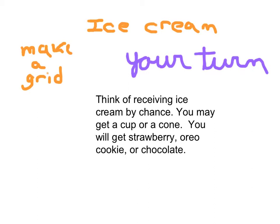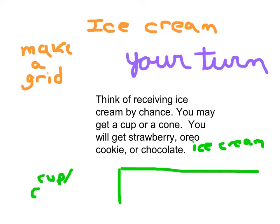So we're going to make a grid for those possible outcomes. And so let's go ahead and set up our grid so that those ice cream choices are going to be the columns and the cup cone as to what it comes in will be there for our rows. Set up your grid and hit pause. Fill in those possible outcomes.